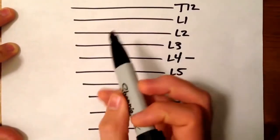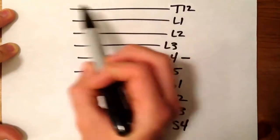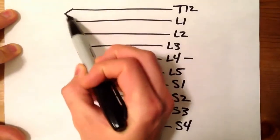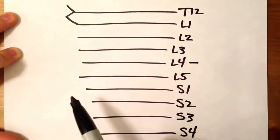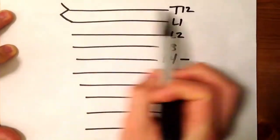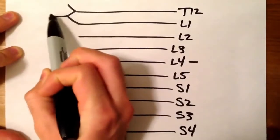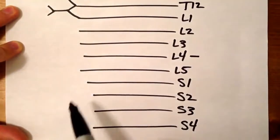So at T12, we're going to make a little conjunction between T12 and L1, and we're also going to leave a little branch like that. Now, from T12 and L1 junction, we're going to make a little V.